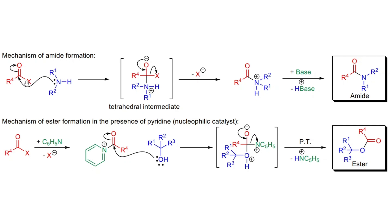The acid chloride is highly reactive and readily reacts with the amine. The amine attacks the carbonyl carbon of the acid chloride, leading to the formation of a tetrahedral intermediate. The intermediate then collapses, releasing the chloride ion, which is then neutralized to form the amide.